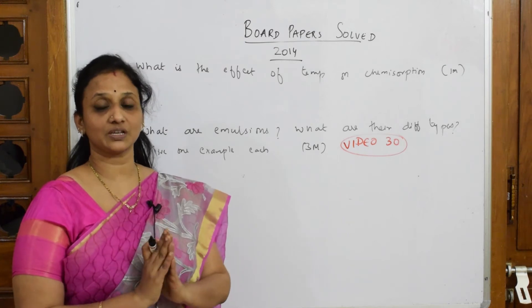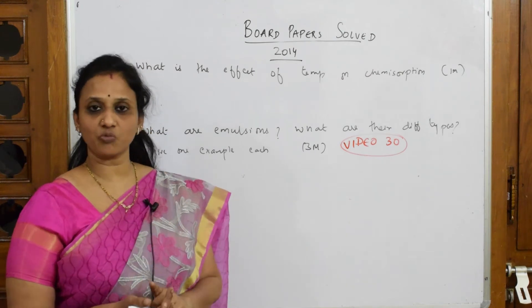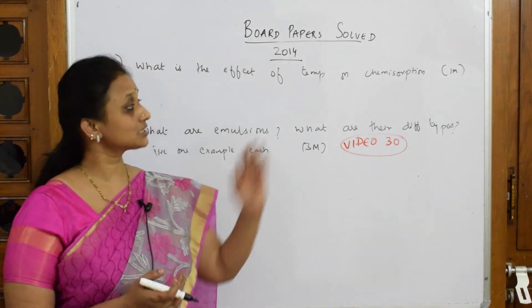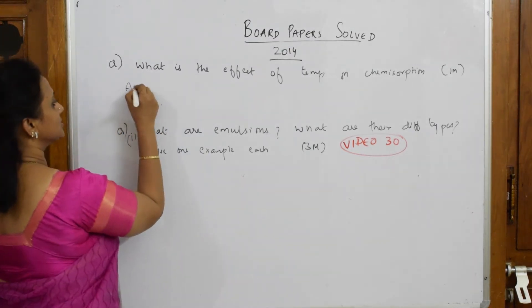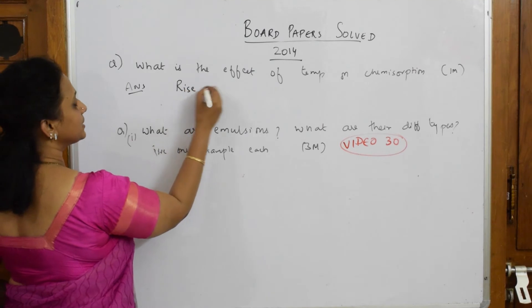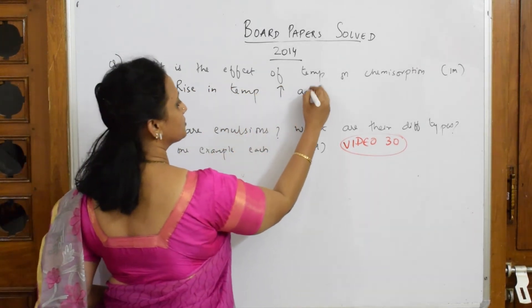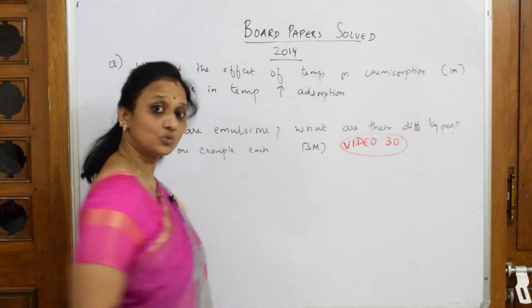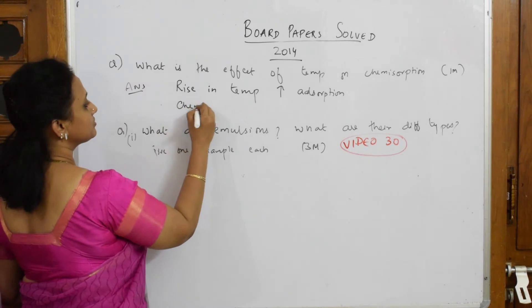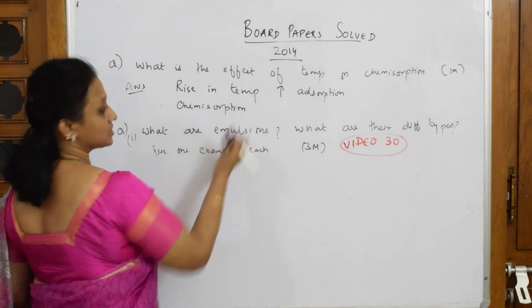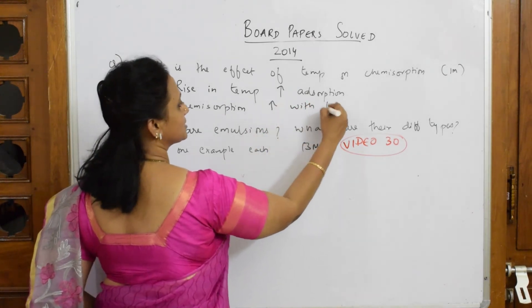When I speak about chemisorption — as temperature increases, the number of bonds increases, and with the number of bonds increasing, chemisorption also increases. So let us write the answer: a rise in temperature increases adsorption. As for chemisorption, it involves the formation of chemical bonds, so chemisorption increases with temperature. That's it — simple two lines.